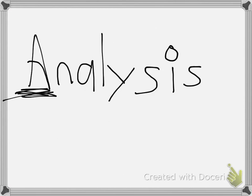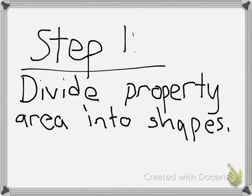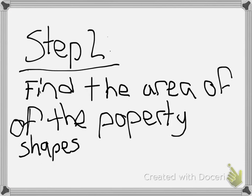The A in GRASS stands for analysis, or the steps you would need to take in order to solve the problem. Step 1: Divide the property area into shapes. For example, you can divide the area into a triangle and a square. Step 2: Find the area of the property shapes.